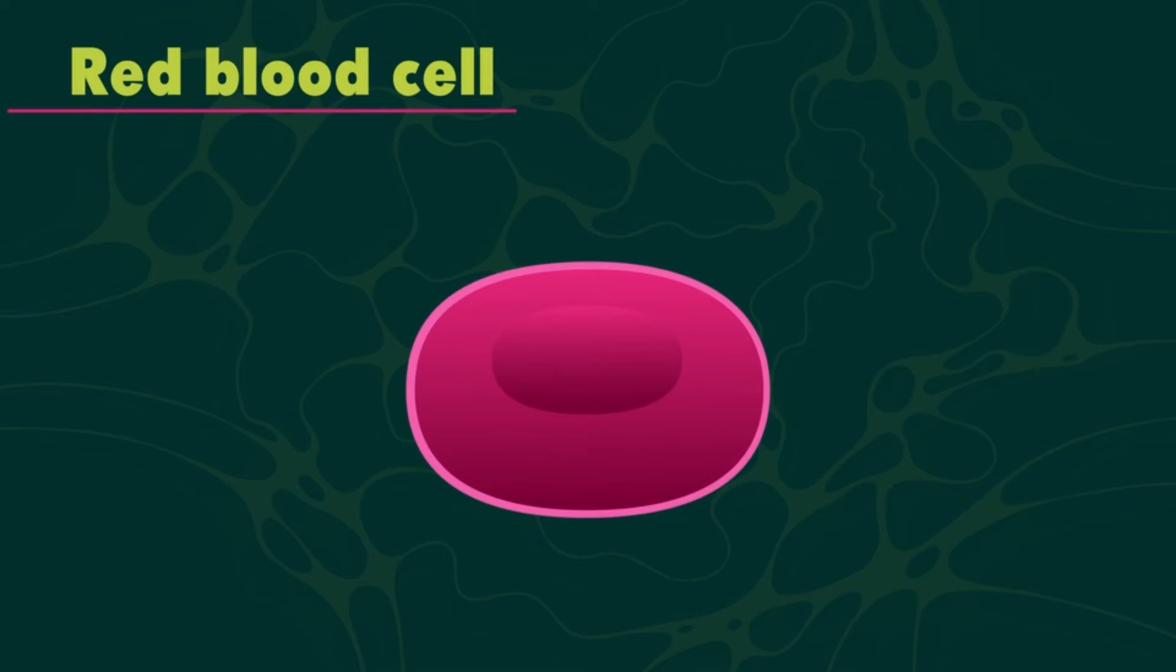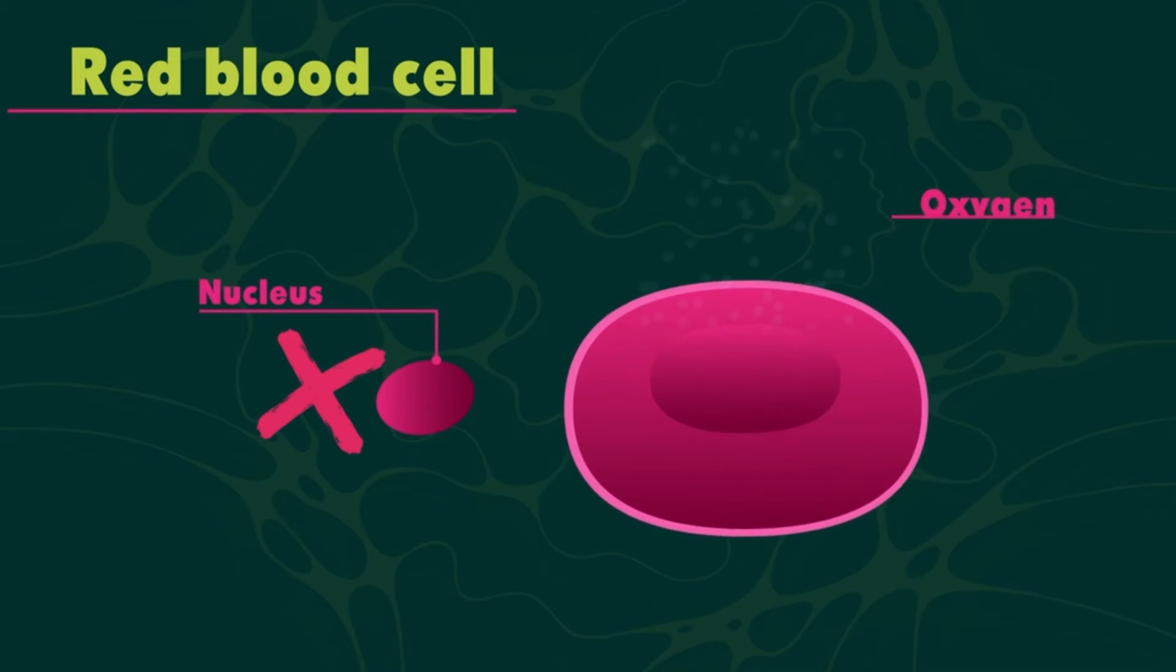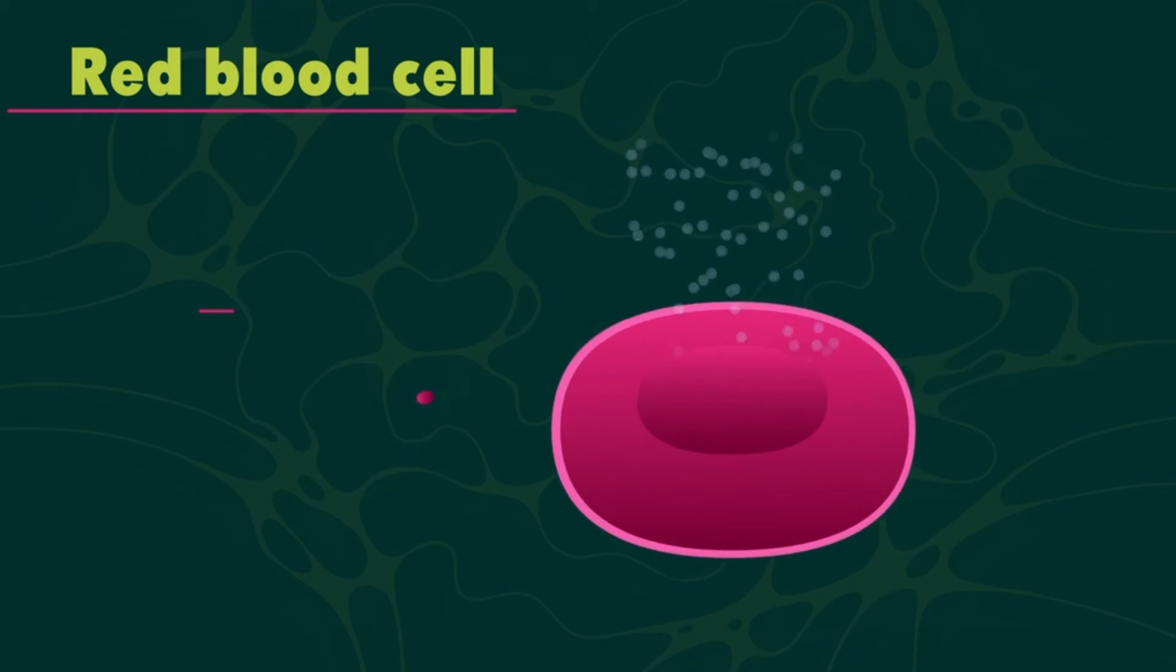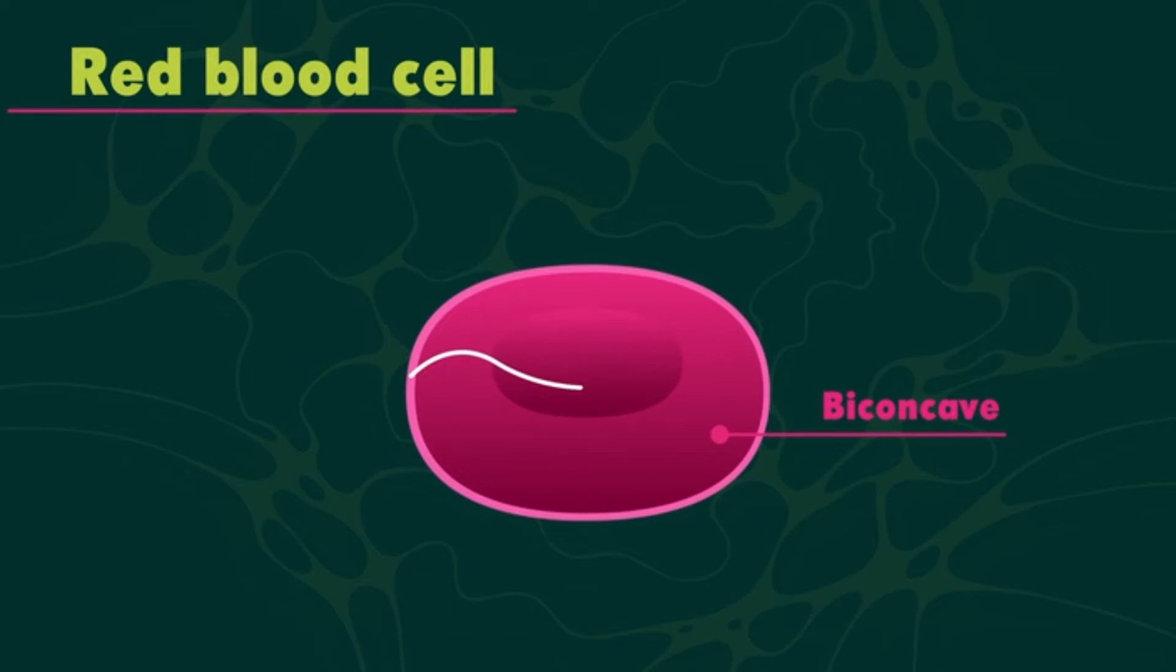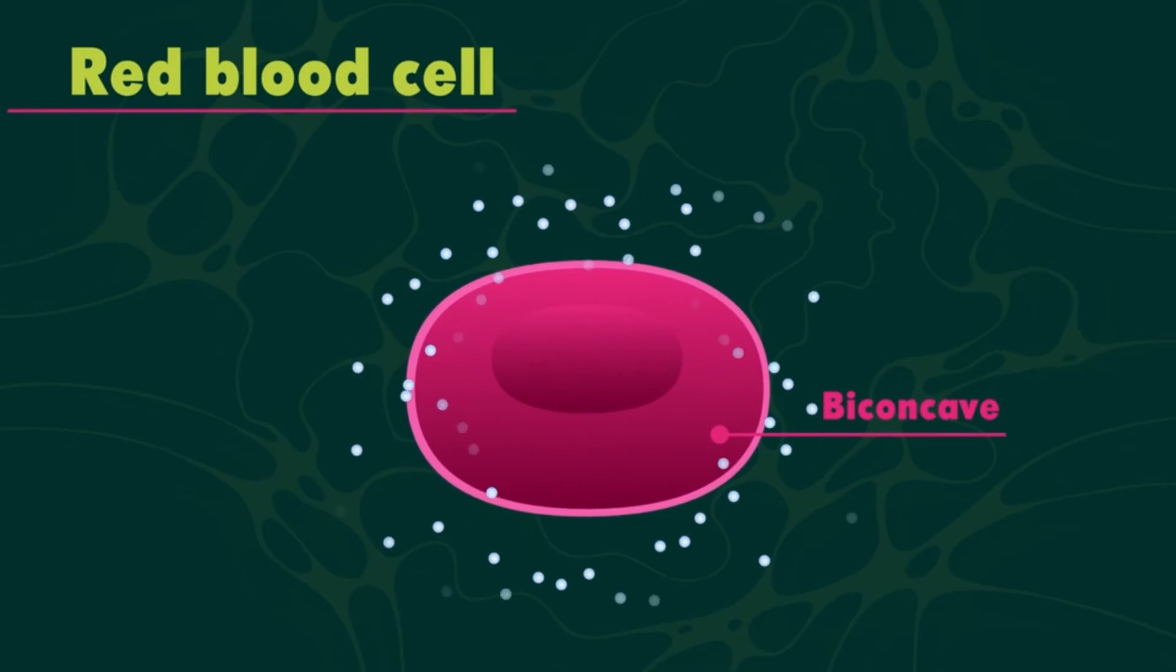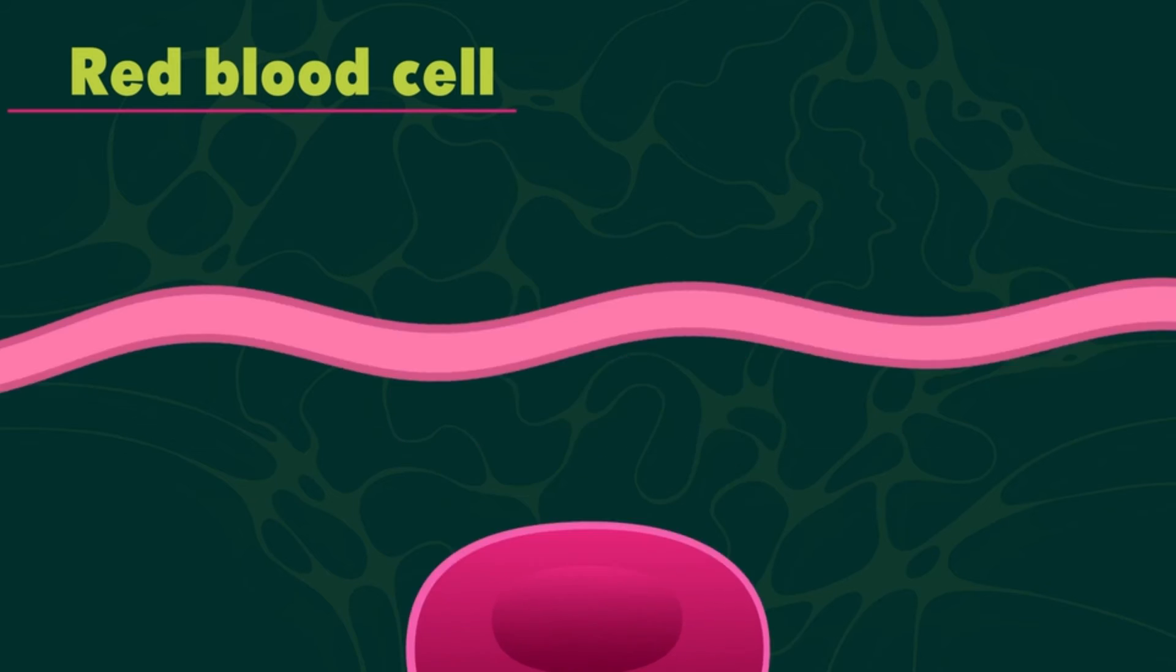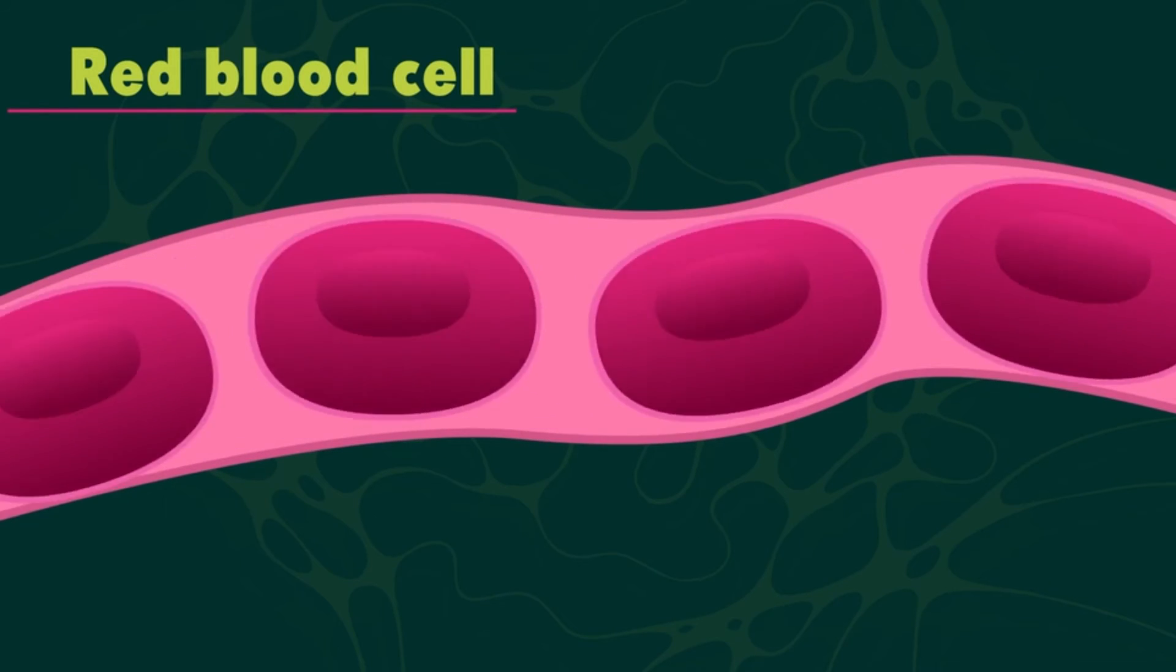Red blood cells, for example, have no nucleus so they can hold more oxygen. They're also biconcave or disc shaped to absorb oxygen more quickly and rounded to flow easily through tiny capillaries.